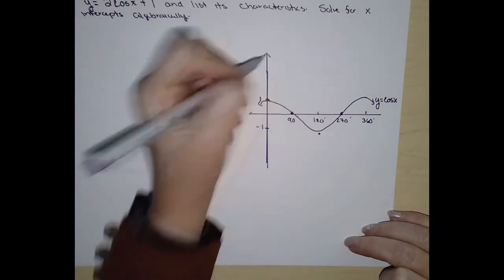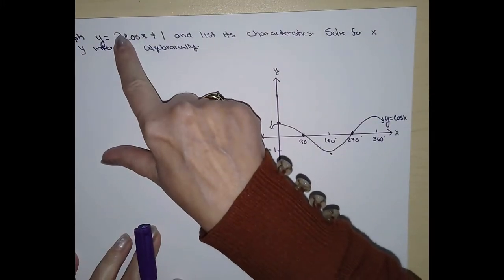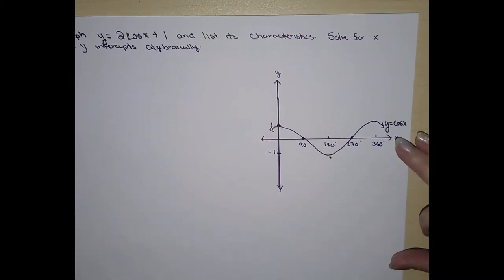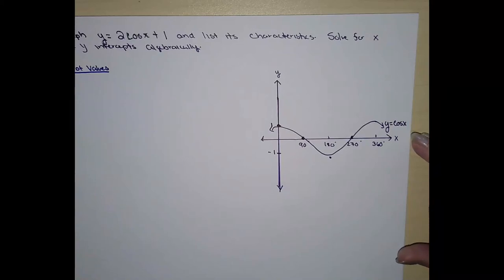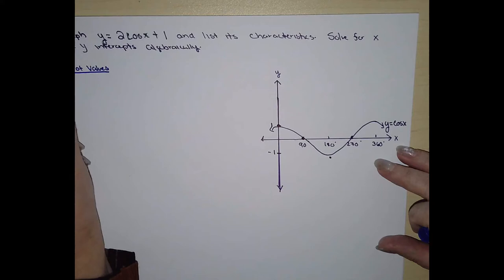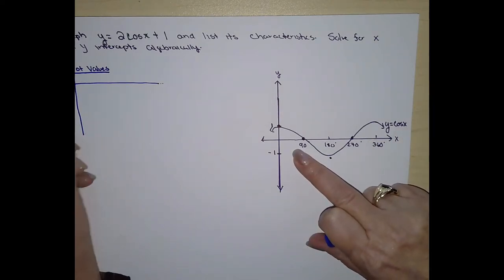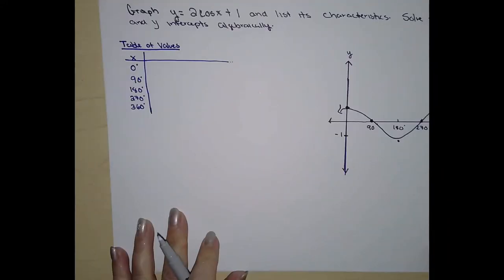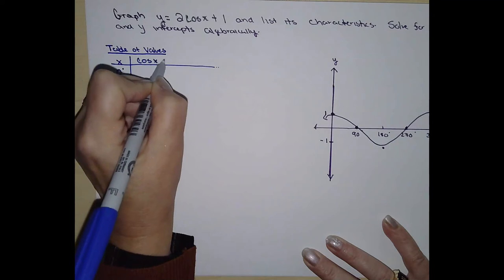I'm going to show you what happens when we do this transformation. These two numbers — the 2 and the 1 — are doing something to the graph. Let's start with a table of values and show you what happens. We're going to use our x values, or our angles: 0 degrees, 90 degrees, 180 degrees, 270 degrees, and 360. You know what the cosine of each angle is.